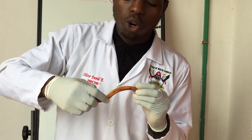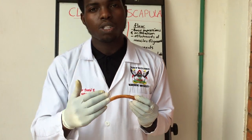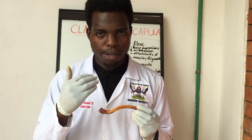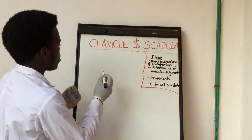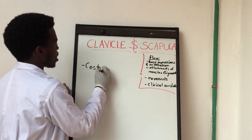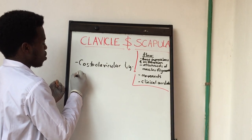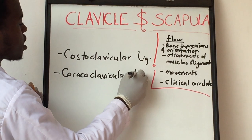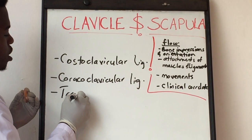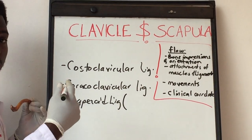Moving further laterally, there is a tubercle known as the coracoid tubercle, which is for the attachment of the coracoid ligament or the coracoclavicular ligament. The coracoid tubercle extends laterally as the trapezoid line, where the trapezoid ligament attaches. The trapezoid ligament can also be referred to as the lateral coracoclavicular ligament. So we have discussed the costoclavicular ligament, the coracoclavicular ligament, and the trapezoid ligament.